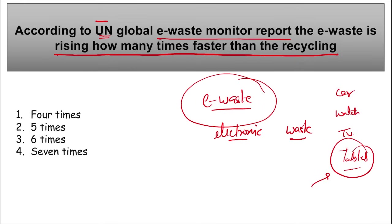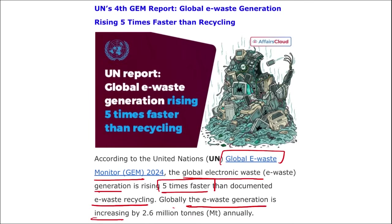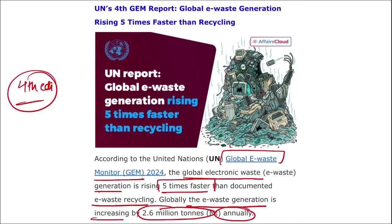The UN Global E-Waste Monitor data states that global electronic waste generation is five times more than the rate at which it is being recycled. The global electronic waste generation is rising five times faster than documented e-waste recycling. E-waste generation is increasing by 2.6 million tons annually. This was the fourth edition of the Global E-Waste Monitor — previously released in 2014, 2017, 2020, and now in 2024.